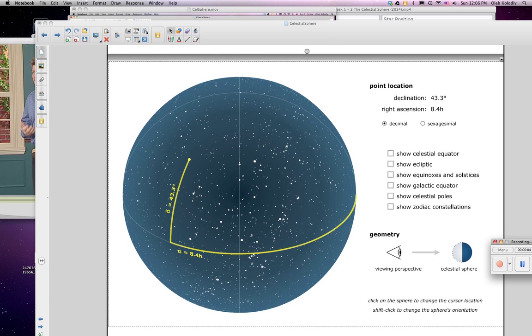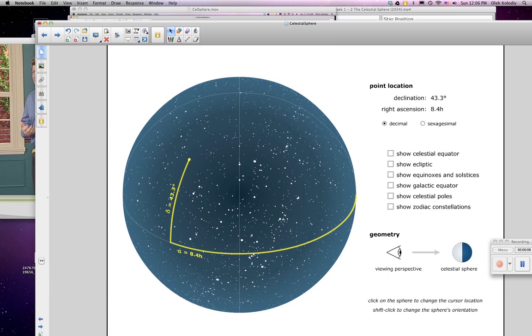In this example, we see a particular star located right here with its coordinates. It has a declination of 43.3 degrees. That means it's 43.3 degrees above the celestial equator. Measure it along here. It has a right ascension of 8.4 hours.